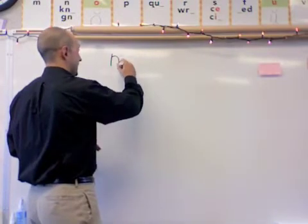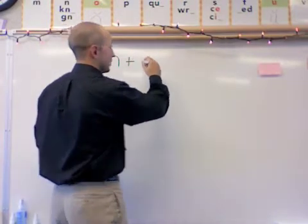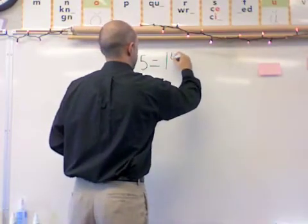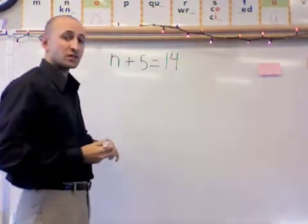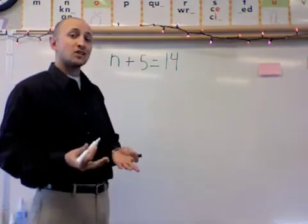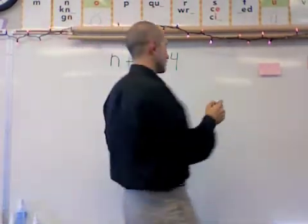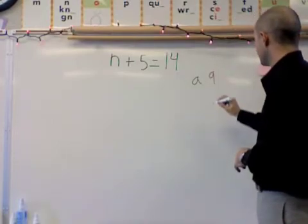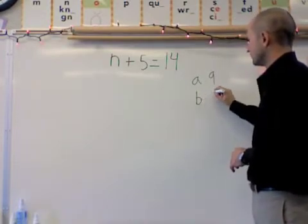we have n plus 5, and we're going to say that n plus 5 equals 14. Now we're going to have two possible statements. First off, we'll say that a will be 9 and b will be 7.